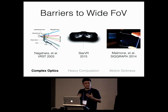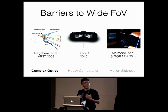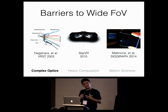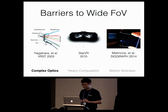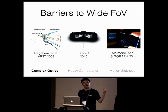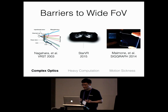Wider fields of view have been long sought after in the literature, but there are three primary obstacles preventing widespread adoption. First, wide fields of view demand specialized optical setups to extend the display into the peripheral regions and wrap it around the user's head. Existing approaches beyond 100 degrees include tiling displays, complex free-form optical designs like the catadioptric setup used by Nagahara et al., carefully designed Fresnel lenses like those in the HTC Vive and the StarVR prototype, or novel light field displays like Maimone's pin light displays.